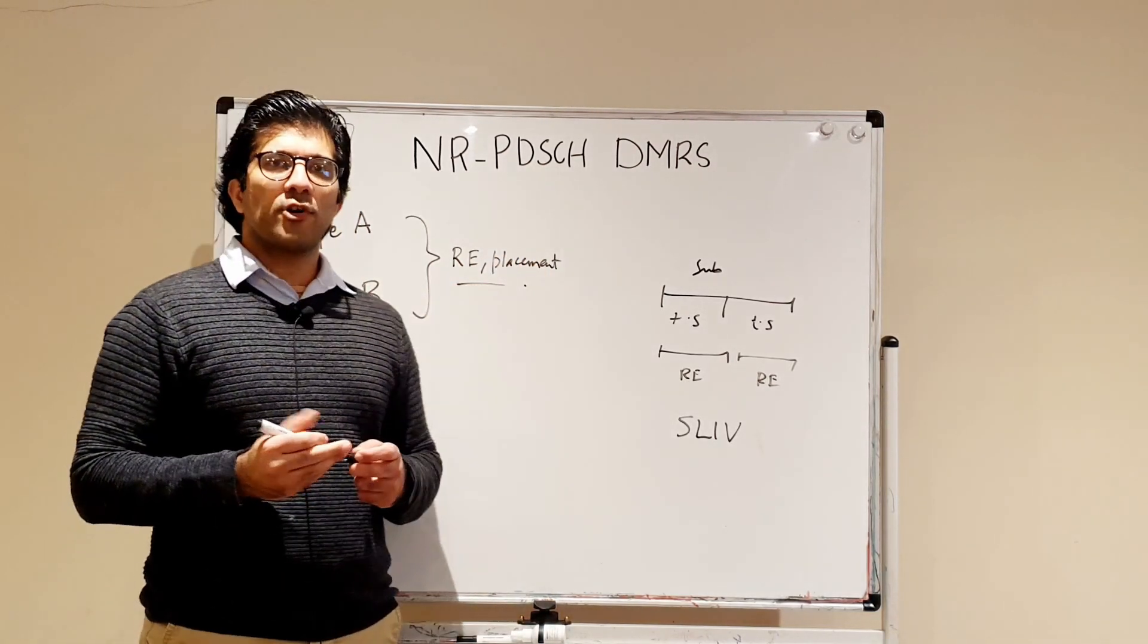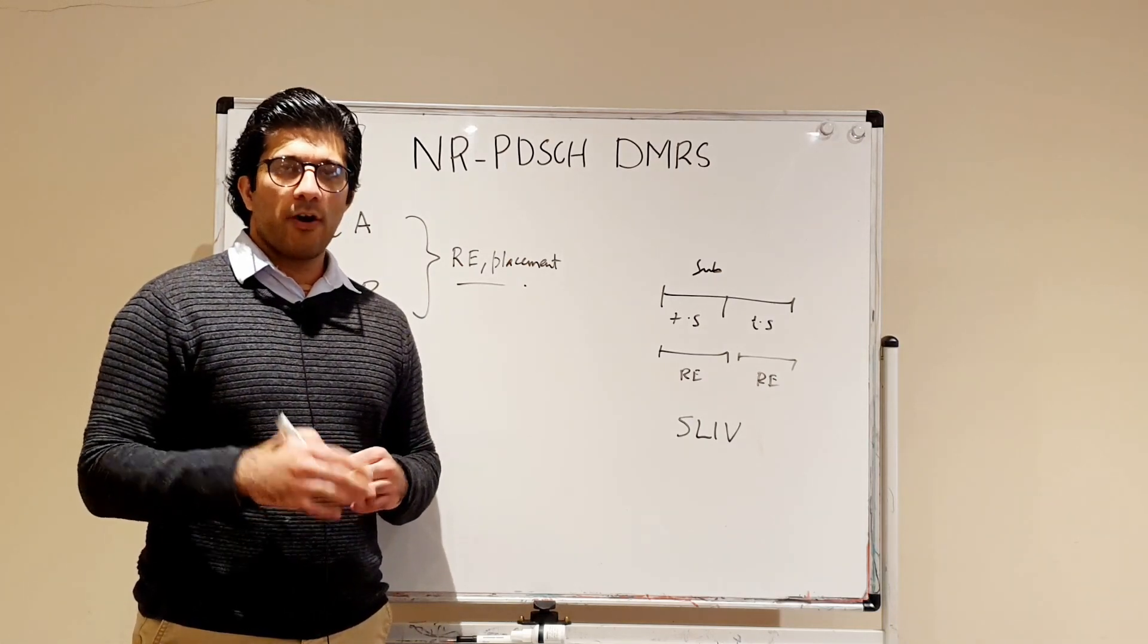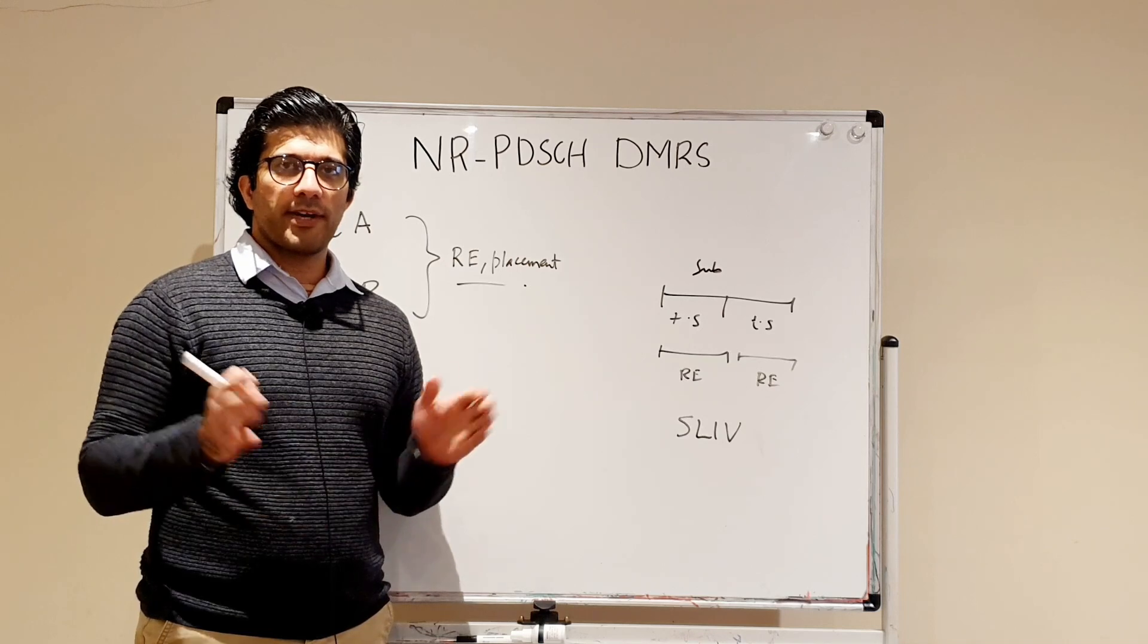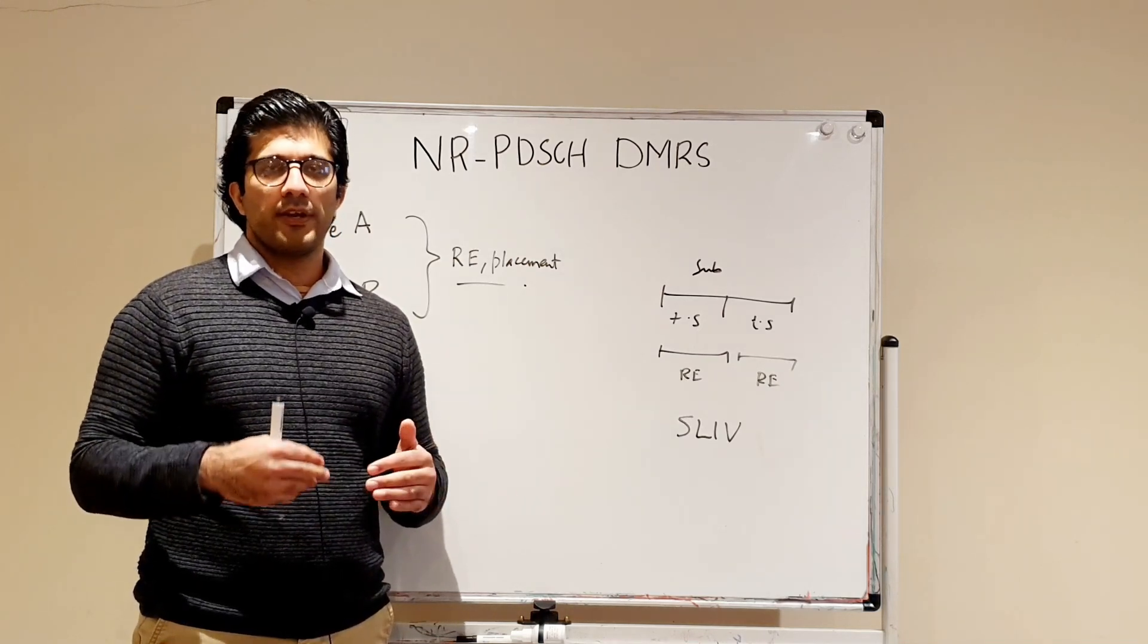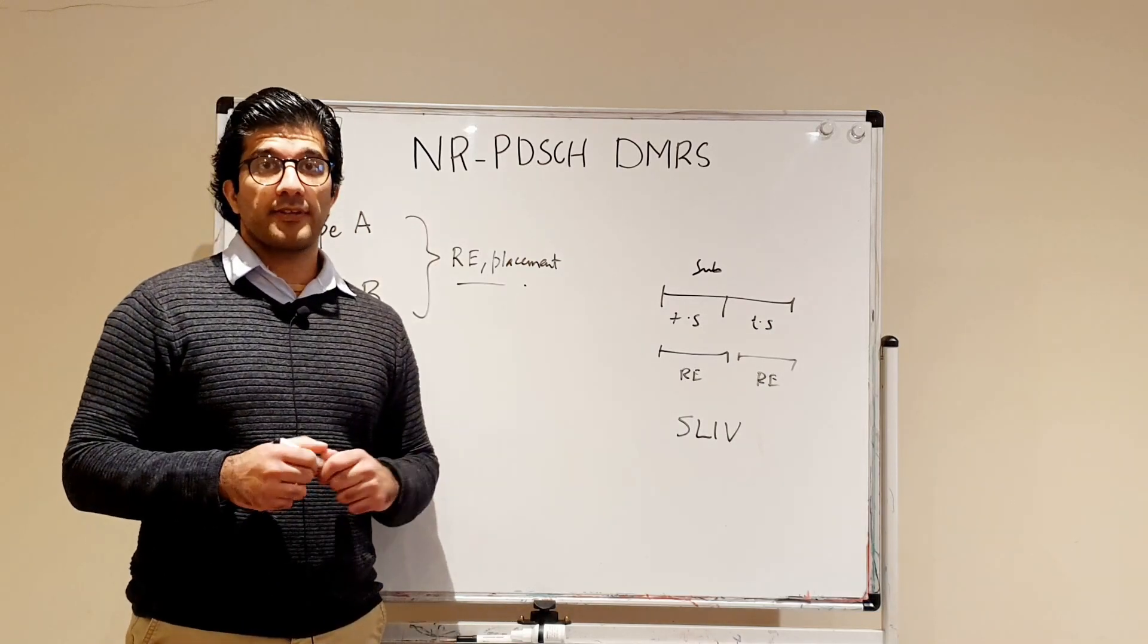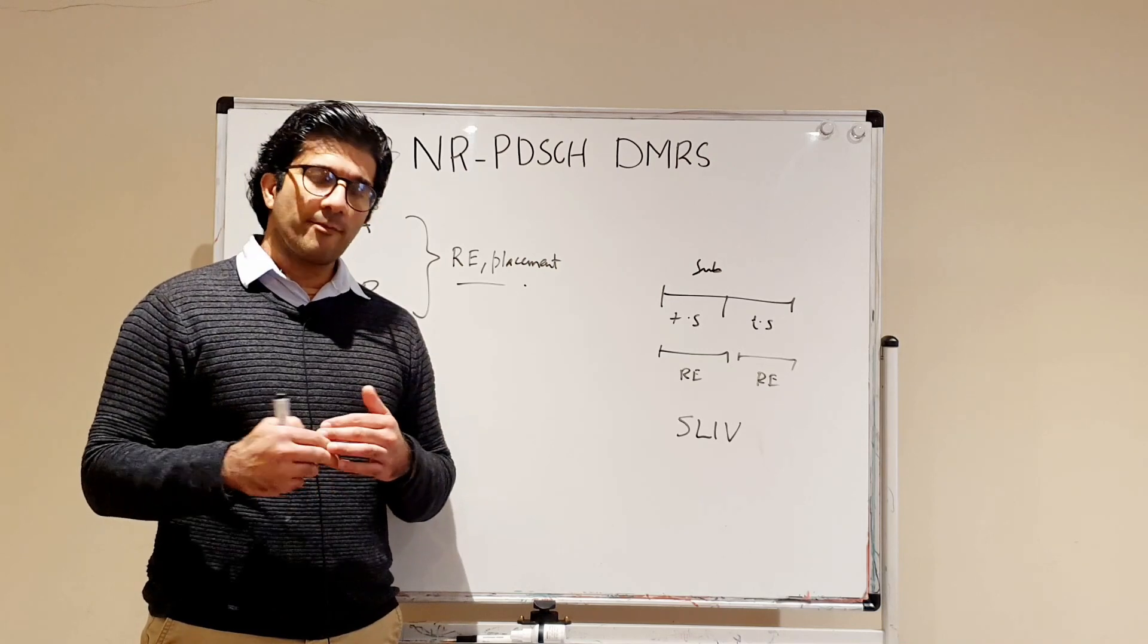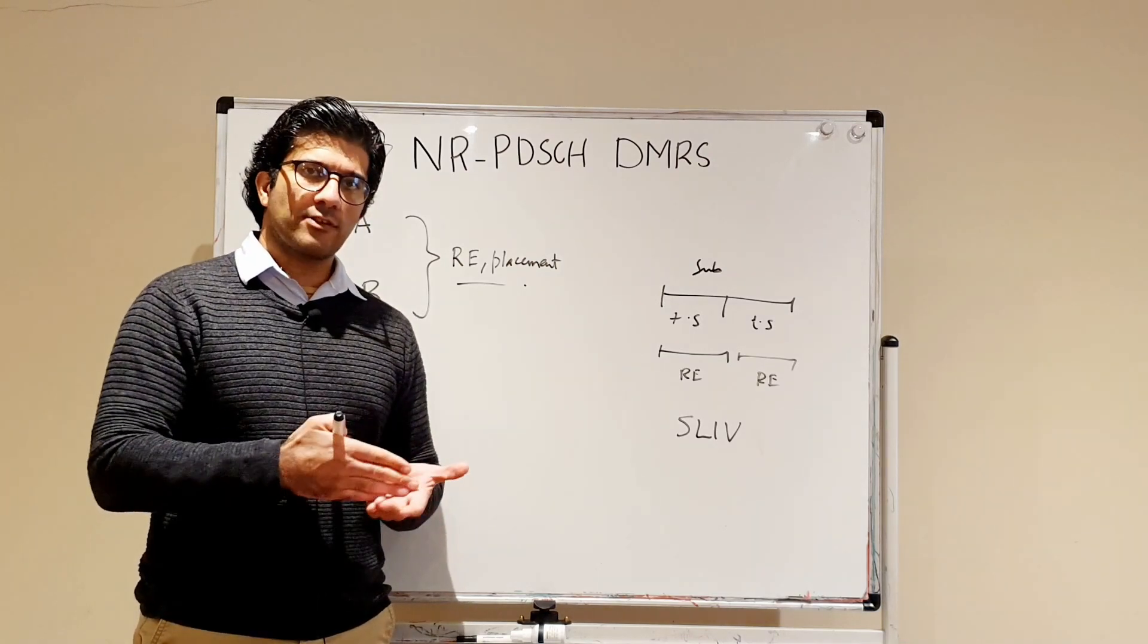The Type A demodulation reference signal can either be on symbol 2 or symbol 3 of a particular time slot. If you want your UE to get a Type A PDSCH DMRS, it can either be on slot 2 or slot 3. If you have been scheduled after slot 3, that is from slot 4 till the last slot, you cannot be allocated this Type A.